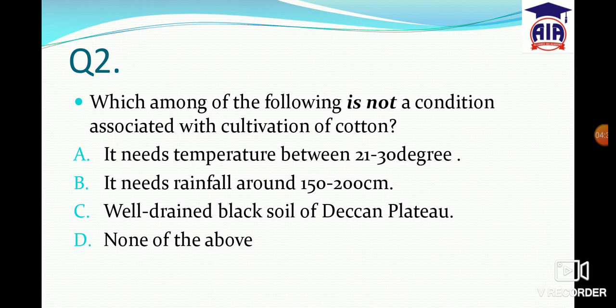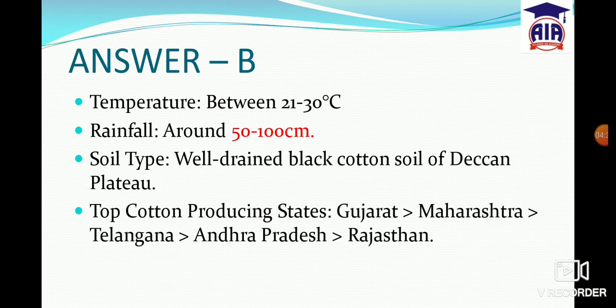The answer is B — rainfall around 150 to 200 cm is incorrect. Cotton actually needs rainfall around 50 to 100 cm. The rest of the statements are correct: 21 to 30 degrees Celsius temperature is correct, and black soil type is completely correct.